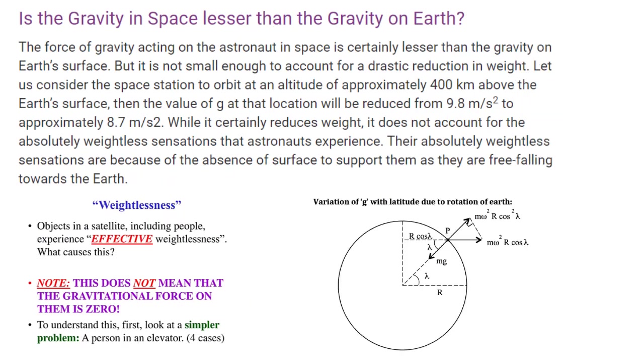Is the gravity in space lesser than the gravity on Earth? The force of gravity acting on the astronaut in space is certainly lesser than the gravity on Earth's surface. But it is not small enough to account for a drastic reduction in weight. Let us consider the space station to orbit at an altitude of approximately 400 kilometers above the Earth's surface, then the value of g at that location will be reduced from 9.8 meters slash s2 to approximately 8.7 meters slash s2.